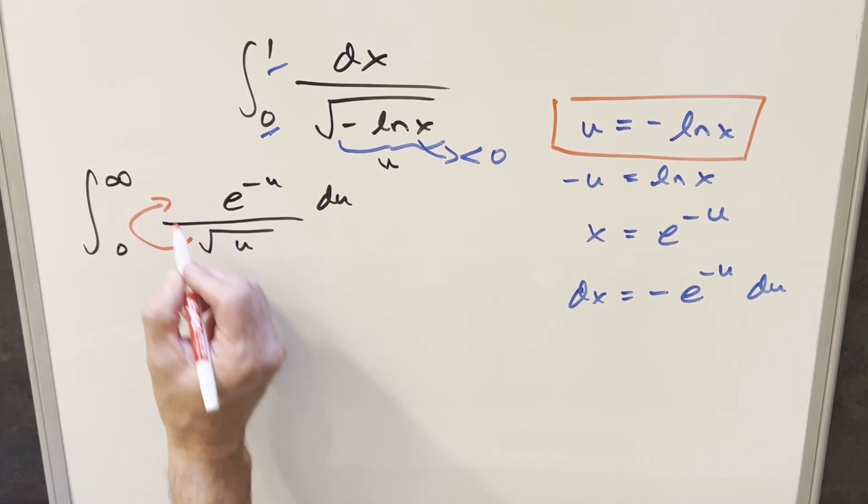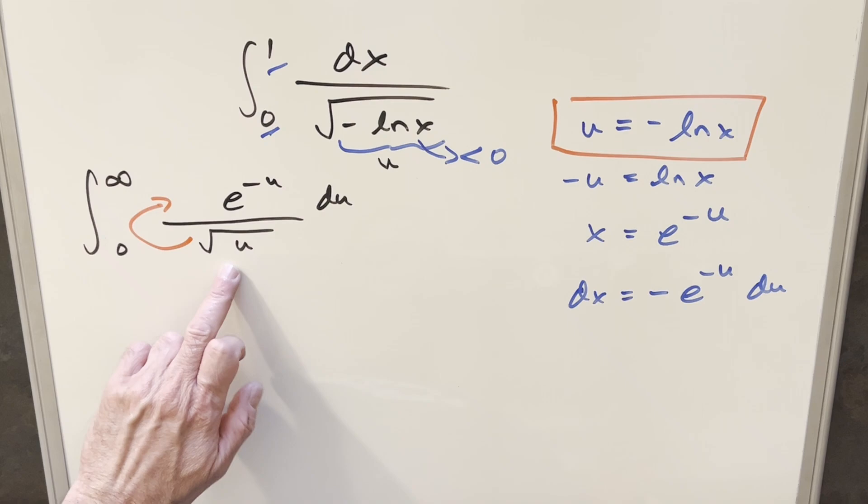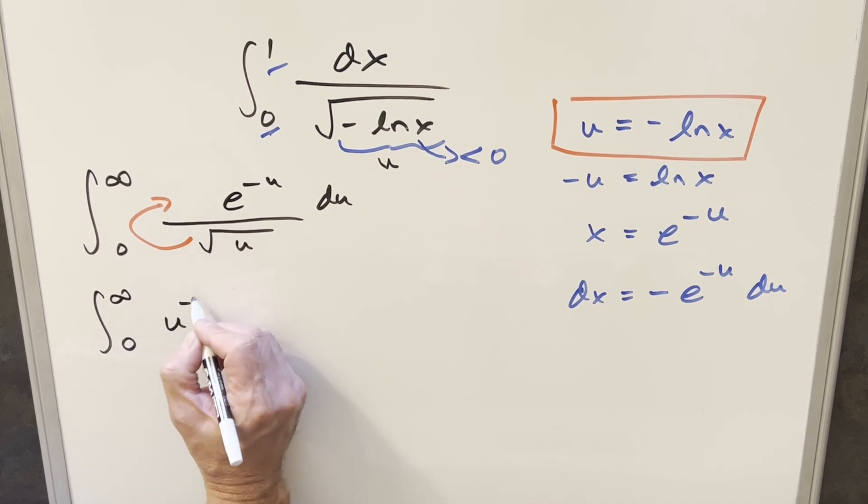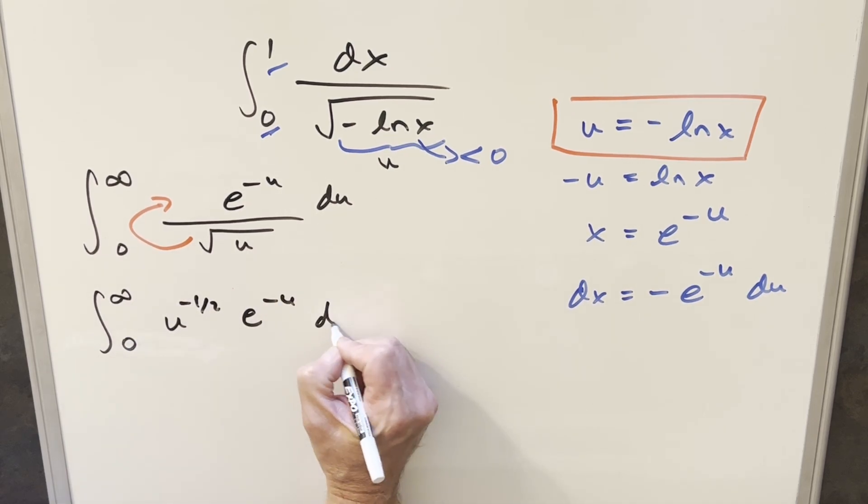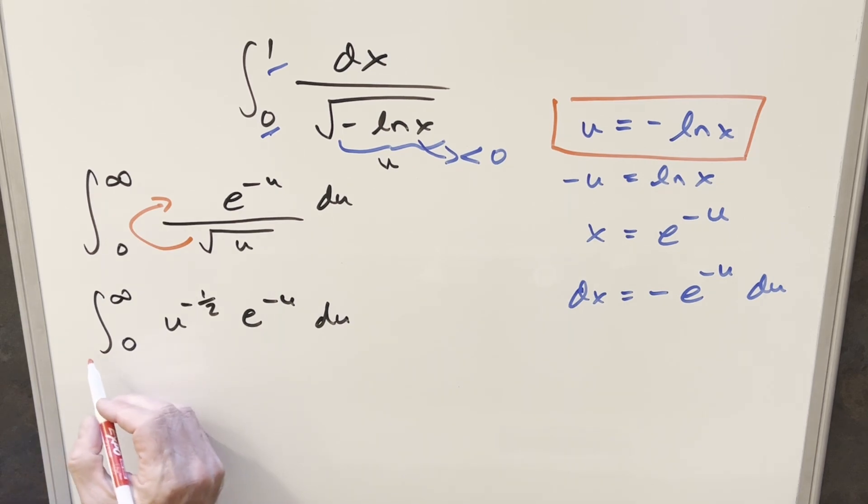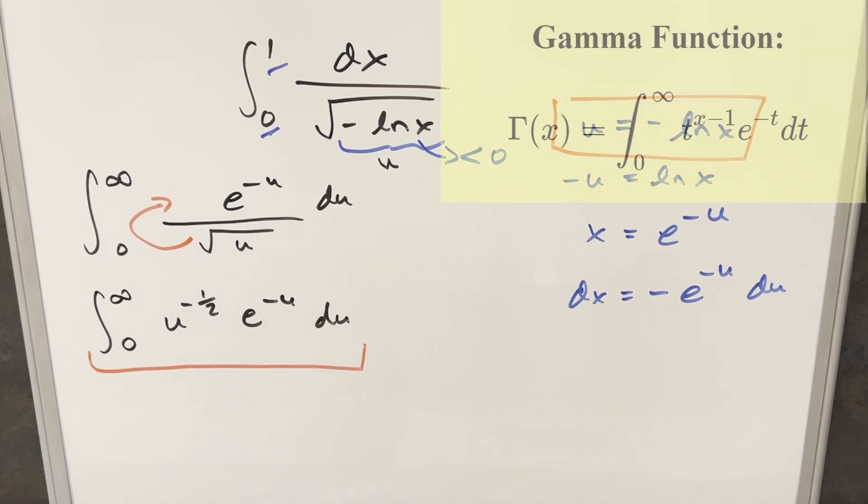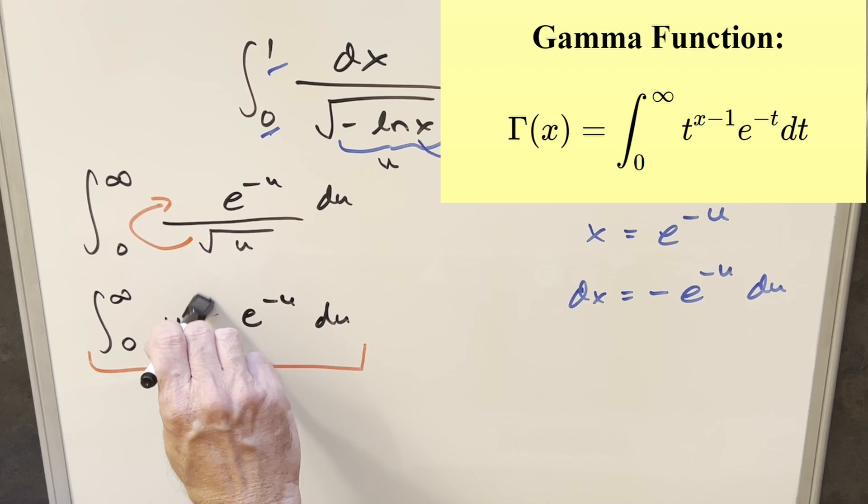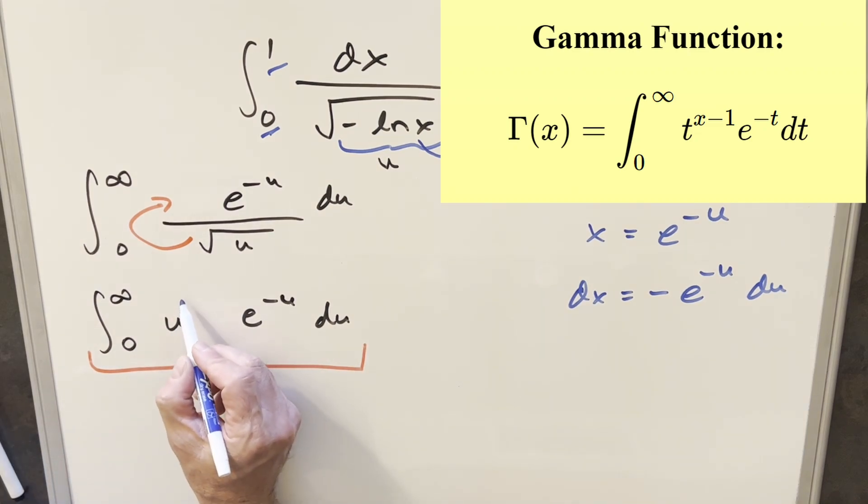Let's bring this into the numerator. Instead of writing it as a square root, I'll write it as u to the minus one half. This becomes the integral from 0 to infinity of u to the minus one half times e to the minus u du. We notice this is set up to use the gamma function, though the exponent should look slightly different. To match the formula, let's write minus one half as one half minus one. The input to the gamma function is just going to be this piece right here.